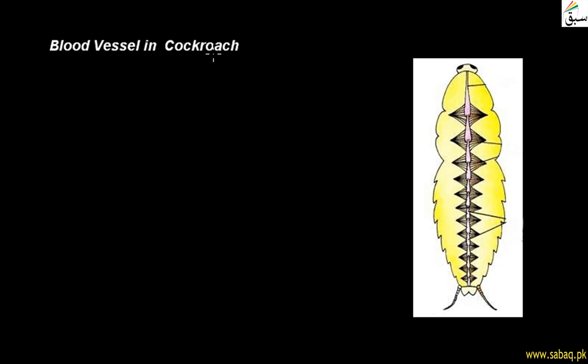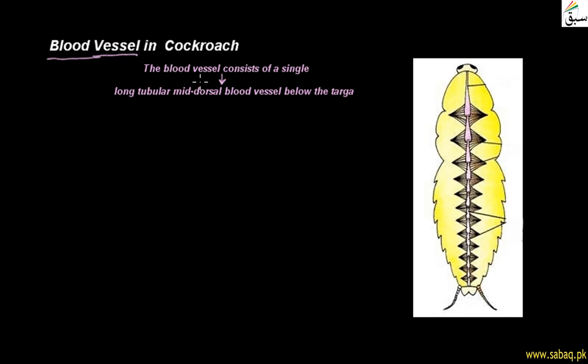Today we will study blood vessels in cockroach. A blood vessel is a tubular structure through which blood flows. In cockroach, we can see that there is a long tubular mid-dorsal vessel present.